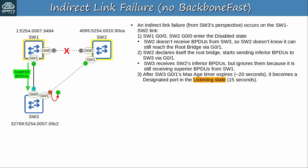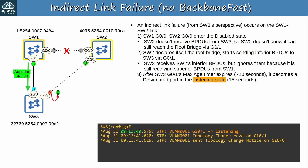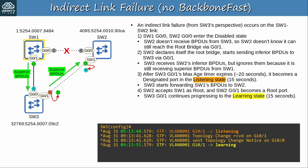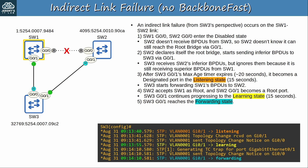SW3 receives those inferior BPDUs but ignores them because it is still receiving superior BPDUs from SW1. SW3 hears SW2 announcing itself as root bridge, but doesn't accept it. After SW3 G0/1's max age timer expires — which takes about 20 seconds — it becomes a designated port in the listening state. SW3 also starts forwarding SW1's BPDUs to SW2 because G0/1 is now designated. As a result, SW2 accepts SW1 as root bridge again and SW2 G0/1 becomes a root port. SW3 G0/1 continues progressing through the learning state for 15 seconds, then finally reaches the forwarding state. The total downtime is about 50 seconds.